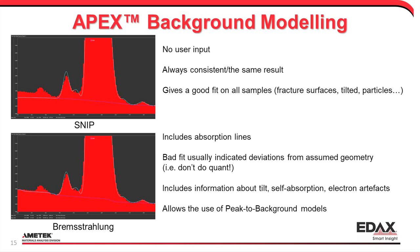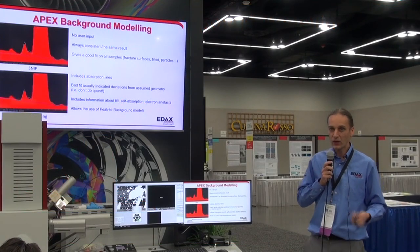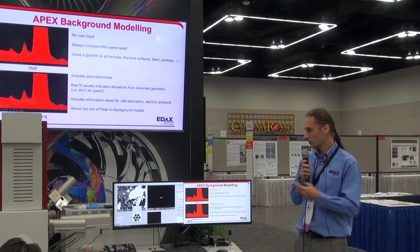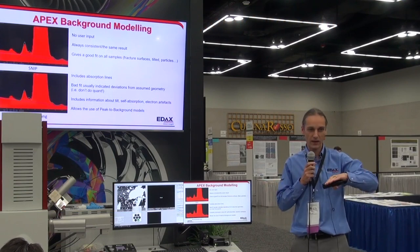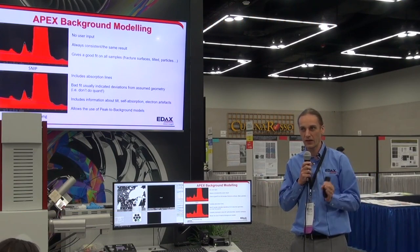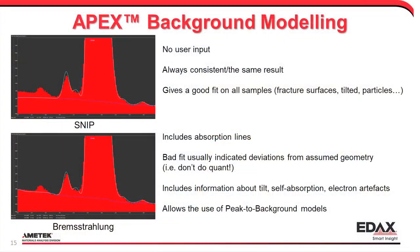The Bremsstrahlung, on the other hand, has absorption lines built in. If you get a bad fit, that means something is wrong — something is not meeting what we think it should be. If you have a fracture surface, the microscope might tell us the sample is flat, but a fracture surface will have all sorts of angles, leading to a deviation compared to the ideal model. The Bremsstrahlung has information about the sample tilt, electron artifacts, and sample self-absorption, and it allows us to use the pixel background model as well.